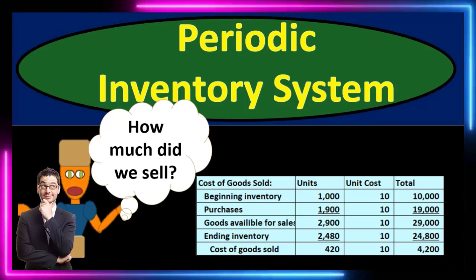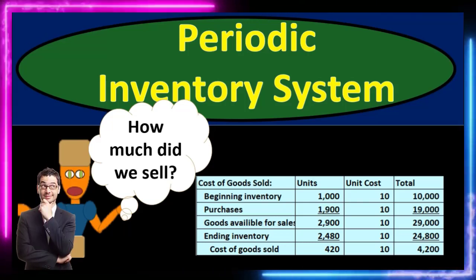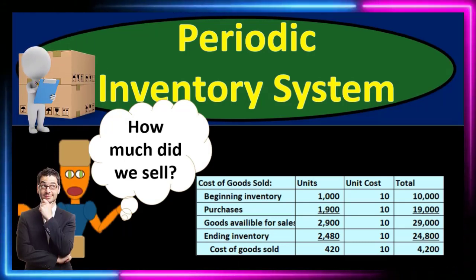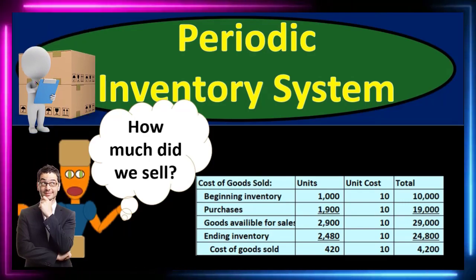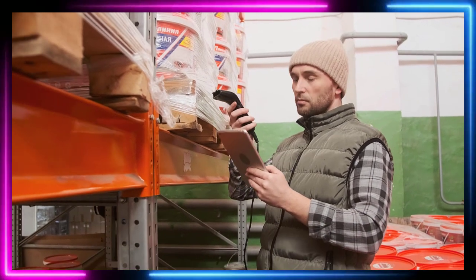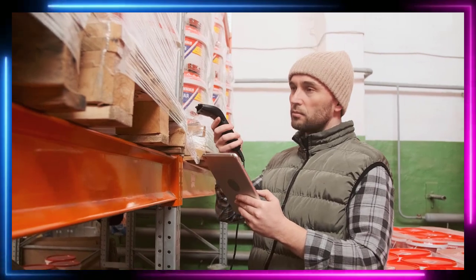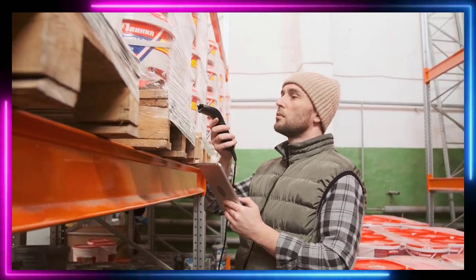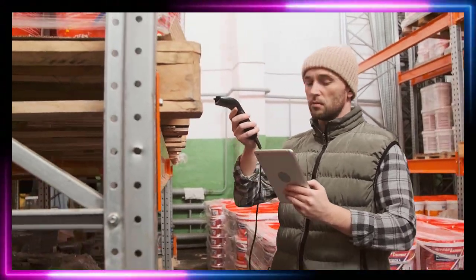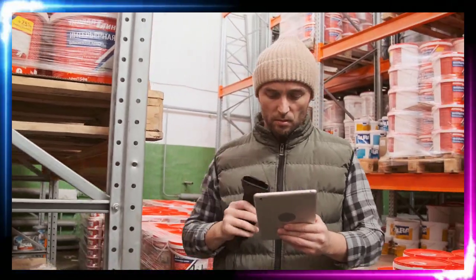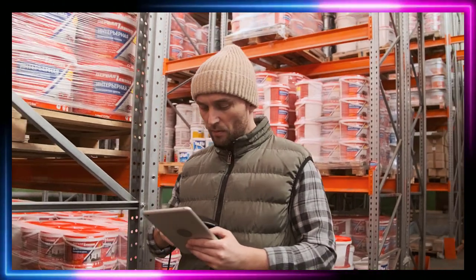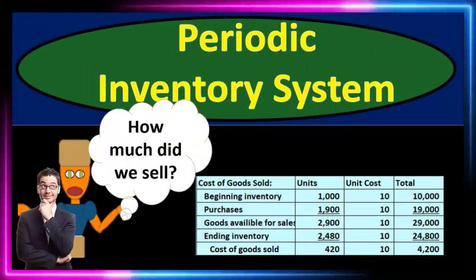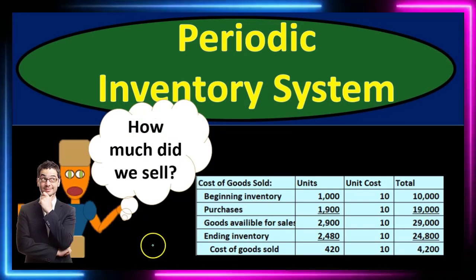If we have a more complex system with a better ability to pick up information as we record it — such as an electronic system or a scanner that knows the cost of items as we go — then we would want to use a perpetual inventory system. It's a trade-off between the added cost of such a system and the ease but less information provided by a periodic system.